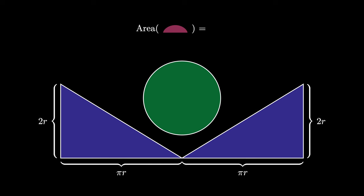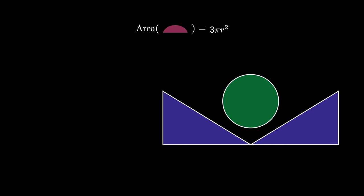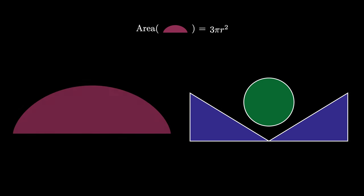The area of the circle is π times r squared. The area of both of the triangles is also π times r squared, so the area under the cycloid is 3 times π times r squared, where r is the radius of the circle rolled to create the cycloid.